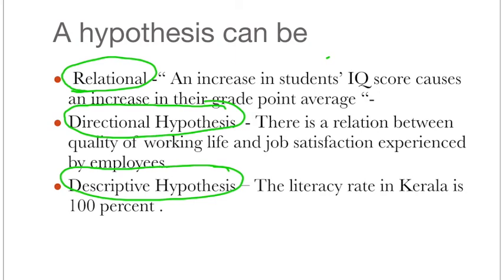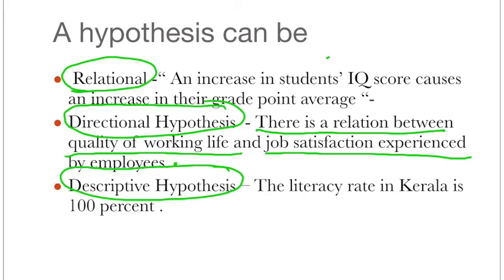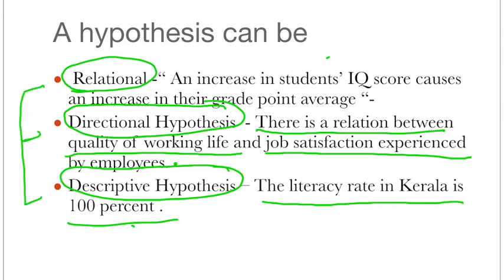In directional hypothesis, we have a certain kind of directional relationship. For example: there is a relation between quality of working life and job satisfaction experienced by employees. Here I'm relating things — quality of working life giving a direction toward job satisfaction. That's why it is called directional hypothesis. For descriptive hypothesis, an example is: the literacy rate in Kerala is 100%. I state this hypothesis and with my relevant data I will prove or justify it at the end of research. These are the three broader categories of hypothesis.